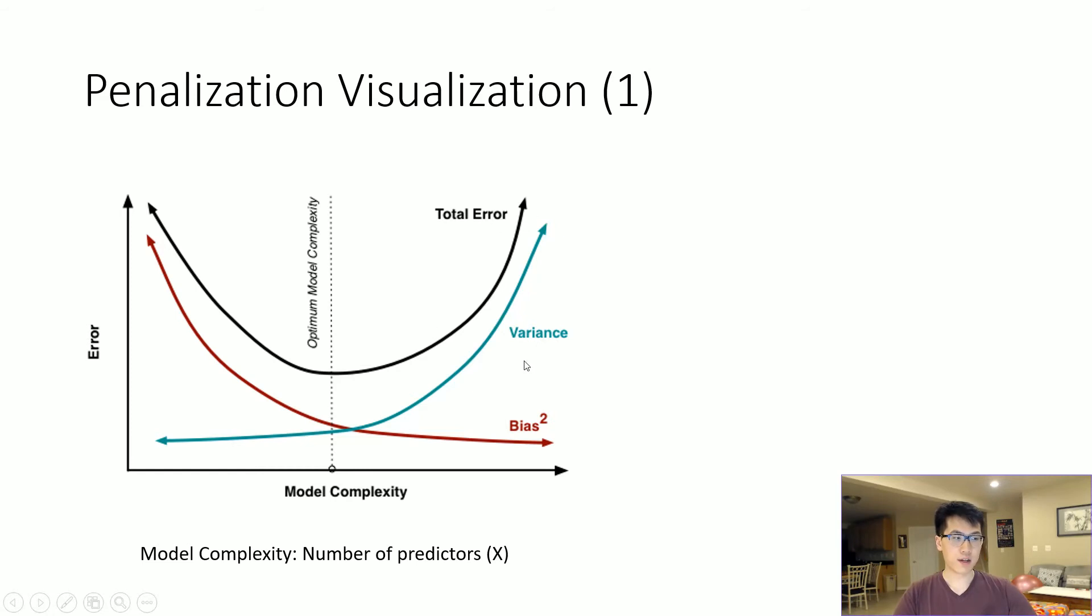If we have too much bias and variance, our overall error will be extremely high and model complexity will be high as well. We want to minimize both model complexity and error.